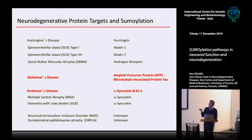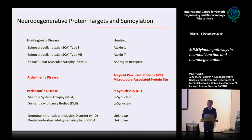The major players are the amyloid precursor protein, tau, synuclein, and DJ1, also seen in related movement disorder diseases. There's also SUMOylation of inclusion bodies in neurological disorders where we don't know the underlying protein. We focused on the main players in Alzheimer's disease.